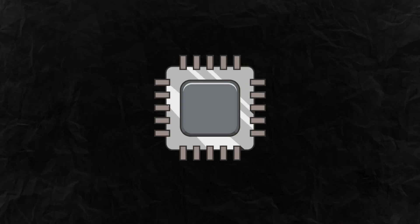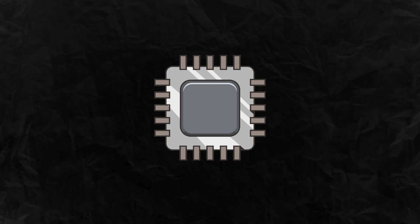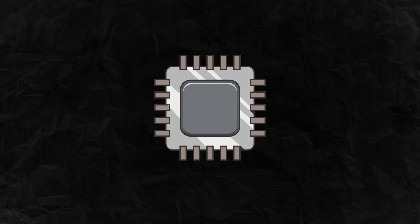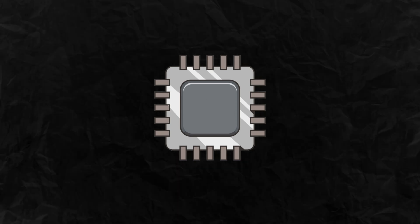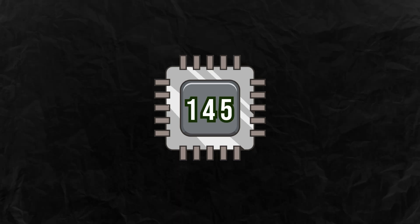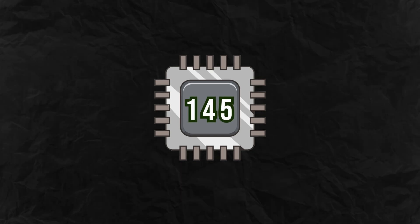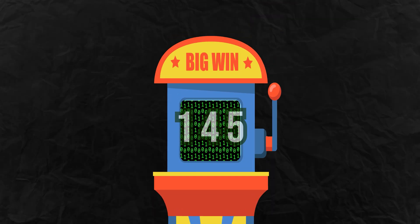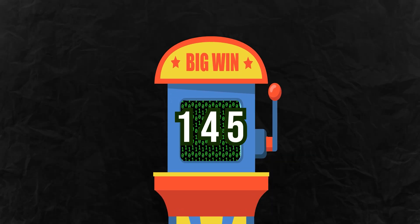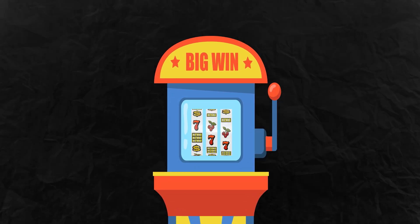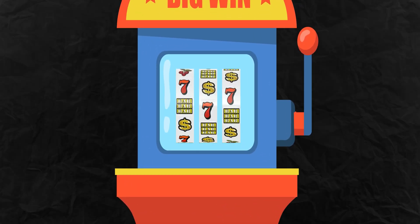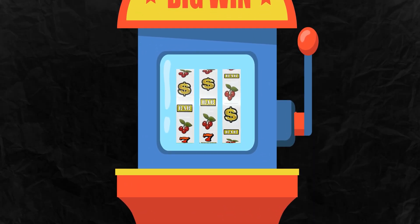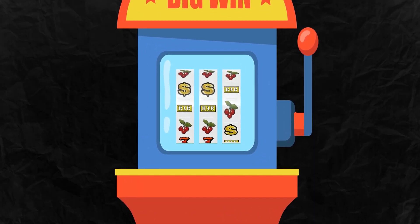All that's happening is the slot says, 'hey chip, give me a random number,' and the chip says, '145.' Then the slot machine goes, '145 — that's two bars and a cherry.' That's literally it.